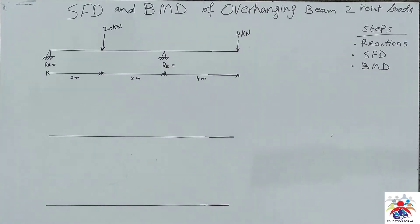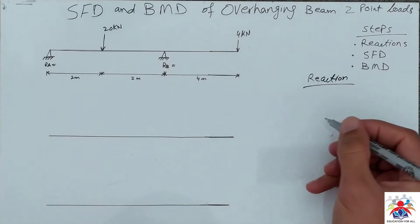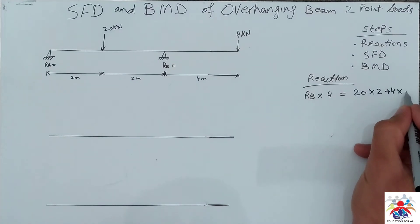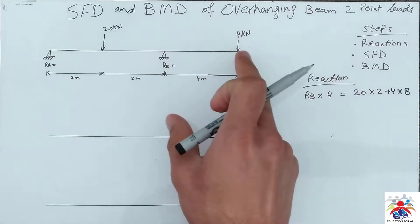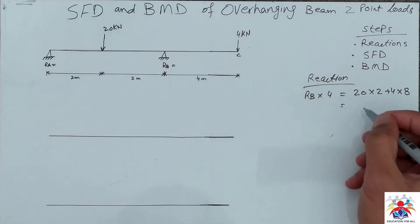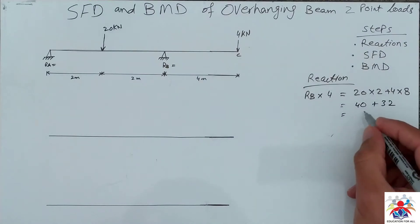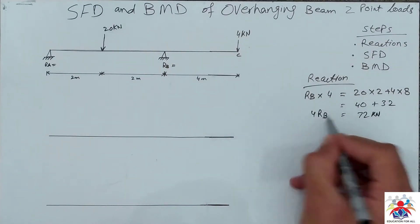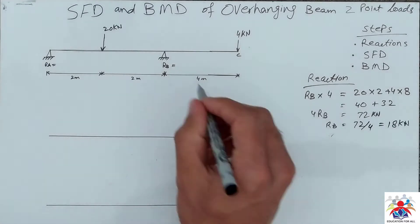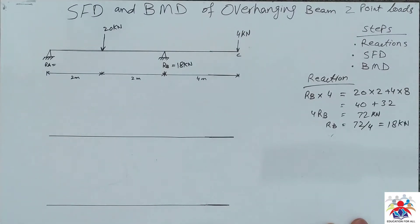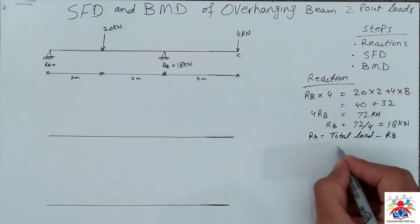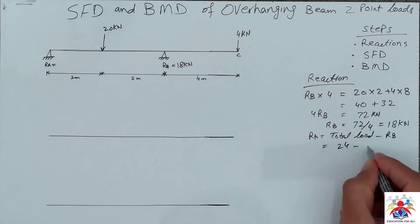We have three steps to follow: reactions, shear force diagram, and bending moment. We calculate reactions first. RB multiplied by 4 equals 20 multiplied by 2 plus 4 multiplied by 8 — the distance from point C to A is 8 meters. So we get 40 plus 32 equals 72 kilonewton. RB equals 72 divided by 4, which is 18 kilonewton upwards. RA equals total load 24 minus 18, giving us 6 kilonewton.